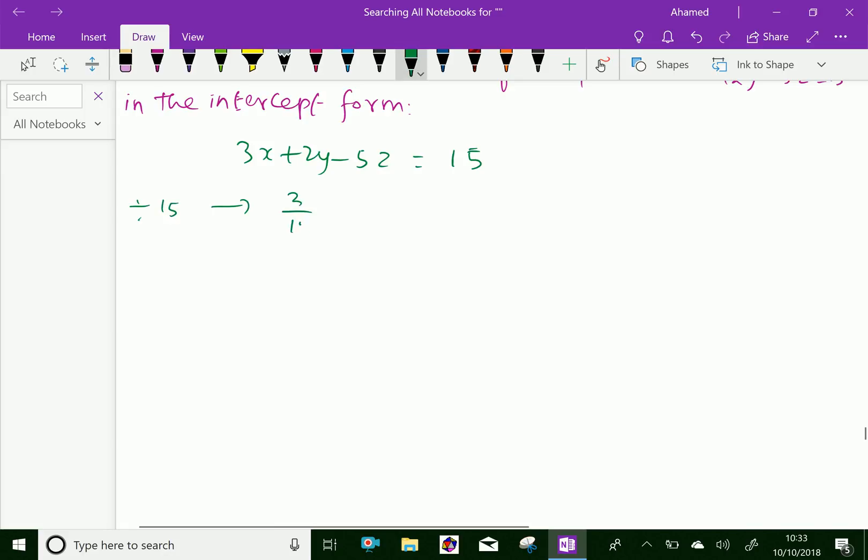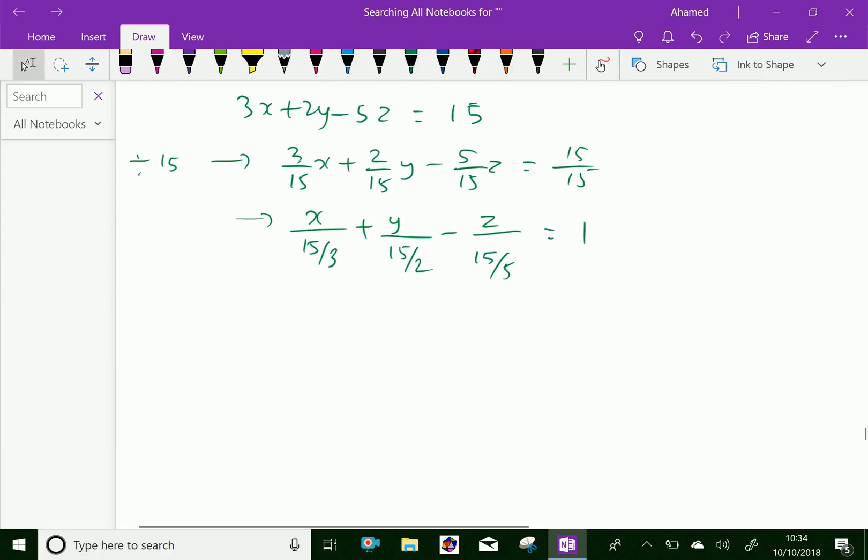We will get 3 over 15 times X plus 2 over 15 times Y minus 5 over 15 times Z equals 15 over 15. We can write this as X over 15 by 3 plus Y over 15 by 2 minus Z over 15 by 5 equals 1. Further, you can say X by 5 plus Y by 7.5 minus Z by 3 equals 1. This is our required equation in intercept form.